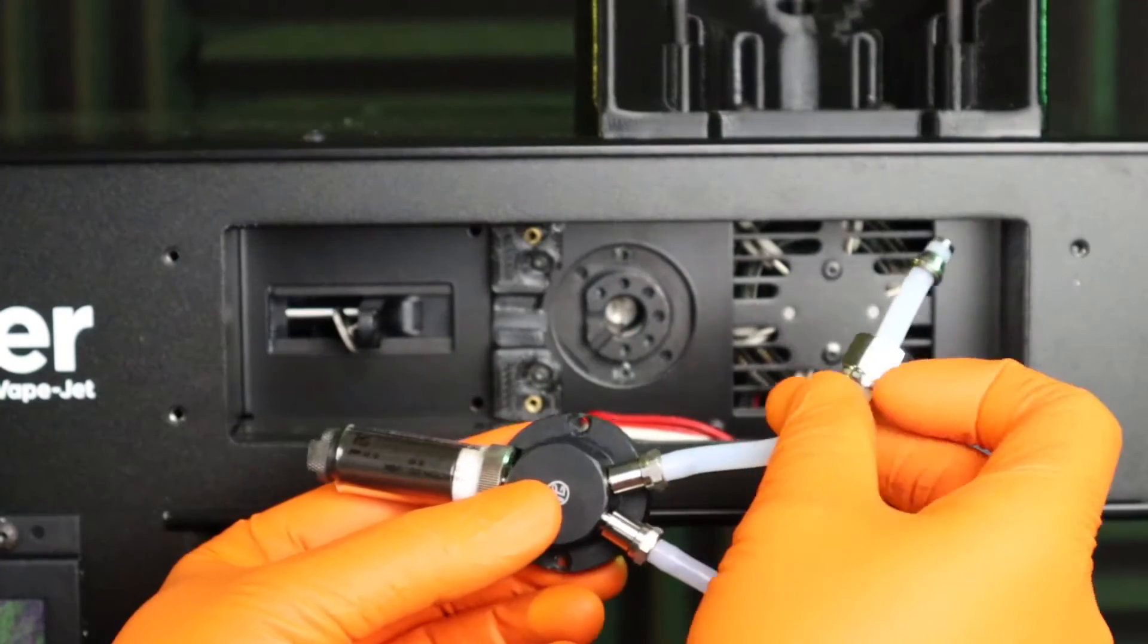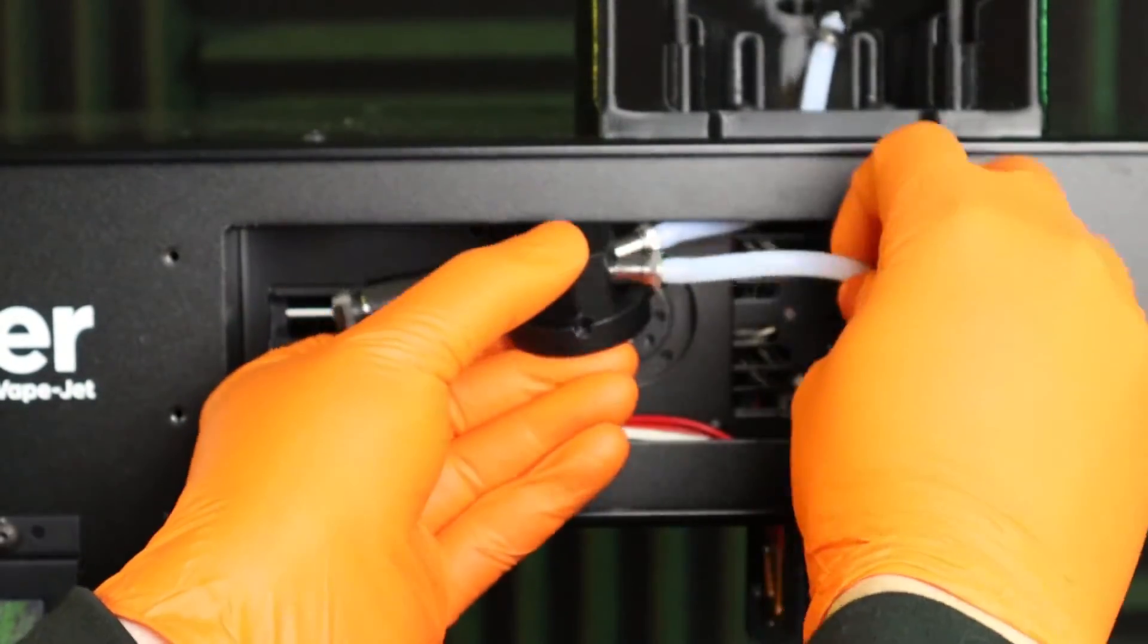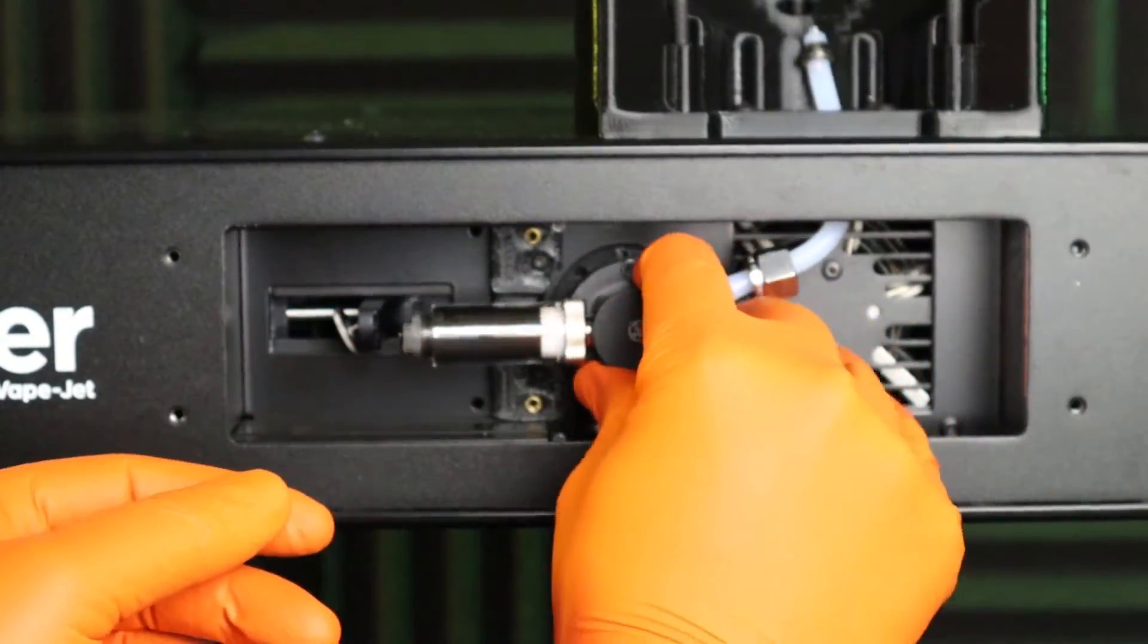If the syringe translation stage is not still at its charged position, go to the advanced screen and click charge under the pump section. Next, push the syringe and valve straight into the mount until fully seated.